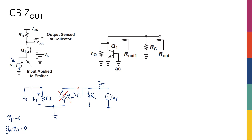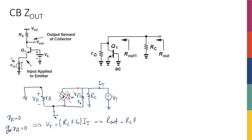Let's actually add R_O, because we didn't say that there's no early effect, so I might have R_O here. None of our discussions will change with R_O. So gm*V_pi is gone, and I have RC and R_O in parallel with each other. Therefore, V_T is going to be RC in parallel with R_O, times I_T.